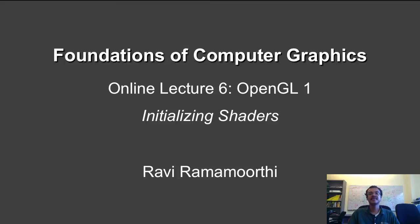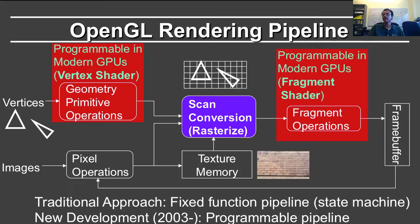The final segment in this initial sequence in OpenGL deals with initializing the shader. Let's go back to the OpenGL rendering pipeline. As you can see, there are vertices and images that both go through the OpenGL pipeline. Vertices are transformed by a vertex shader, then you do scan conversion.